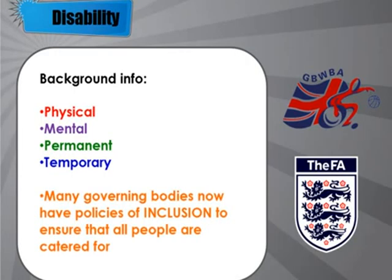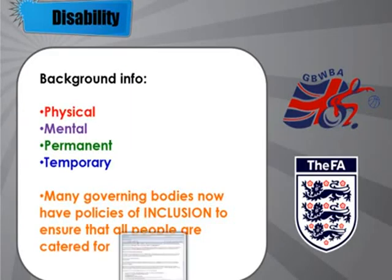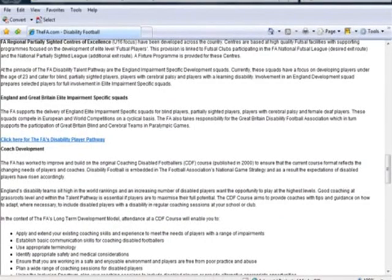Many years ago, lots of different governing bodies in sports weren't accessible for people with disabilities. Rules weren't changed and disabled people weren't properly able to take part in these sports in a recognised way. Over the years, many governing bodies have come up with policies for inclusion — a set of rules and strategies to get disabled people involved in playing sports in adapted ways.